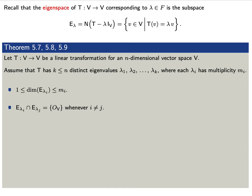The eigenspaces only intersect in one point. That is, as long as i is different from j, E sub lambda i intersects E sub lambda j only at the origin, namely the zero vector.